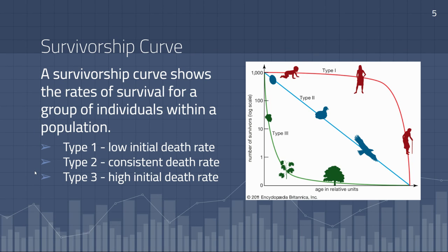We can also represent different species on what we call a survivorship curve. There are three types of survivorship curves you should be familiar with for the AP exam. The first, represented in red, is a type one survivorship curve. In a type one survivorship curve, we see organisms that have a very low initial death rate — many of the organisms survive on to adulthood. Humans would be an example of a type one survivorship curve.